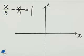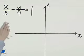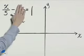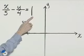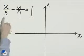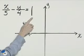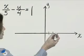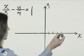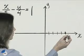Graph the equation x over 5 minus y over 4 equals 1 using the x and the y intercepts. For the x intercept we let y equals 0, so we'll have x over 5 equals 1. If we multiply both sides by 5 that gives us x equals 5, and so the x intercept is (5, 0).